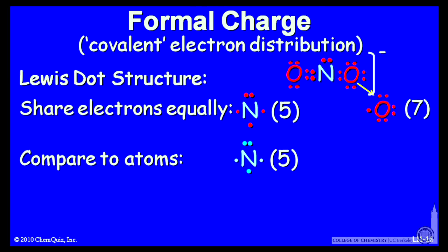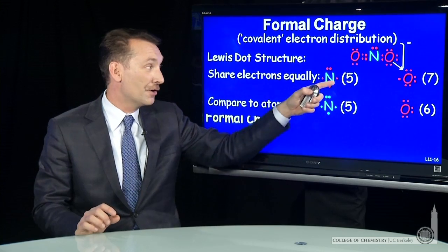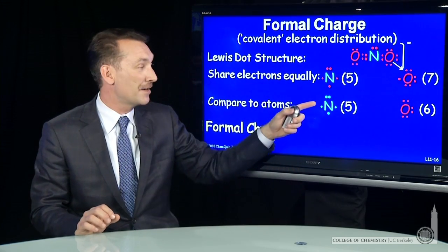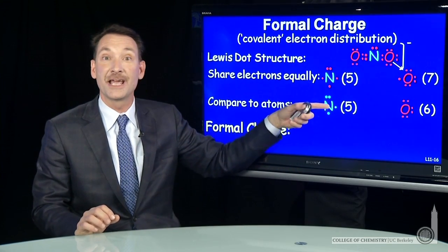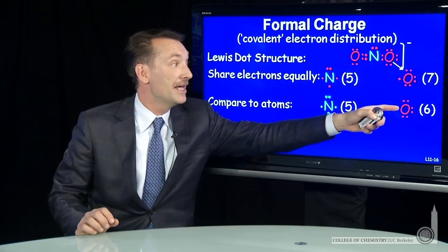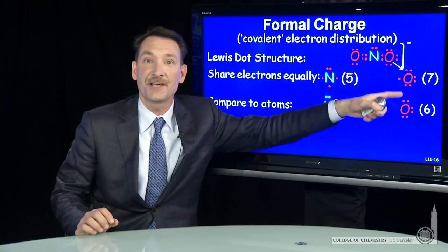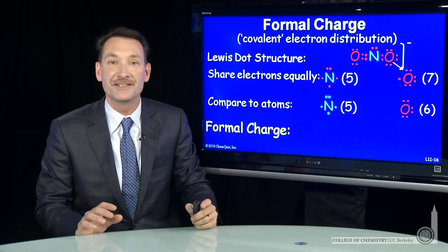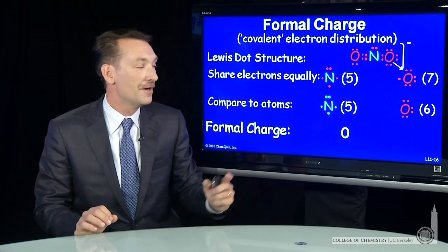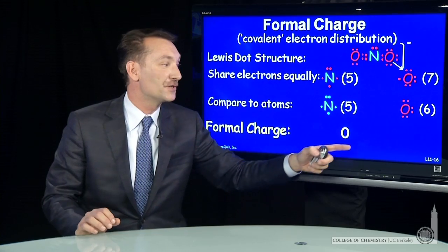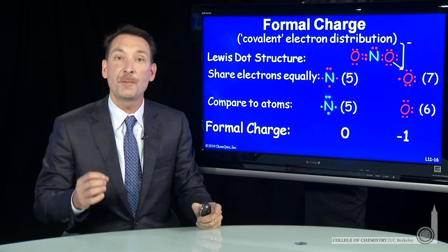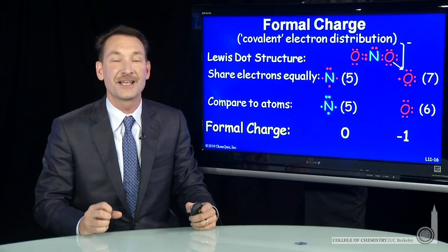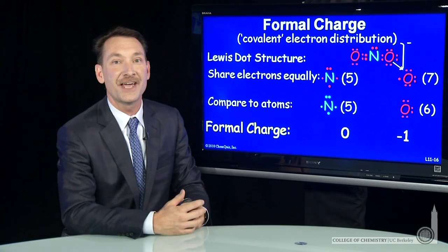Compare that to the neutral atoms: nitrogen has five valence electrons, oxygen has six valence electrons. So the formal charge is zero for nitrogen — it has the same number of electrons in the molecule as the neutral atom. And it'll be minus one for this oxygen, since it has one more electron in the molecule than in the neutral atom. Formal charges of zero and minus one will help us determine the quality of Lewis electron dot structures, and we'll look at that next.